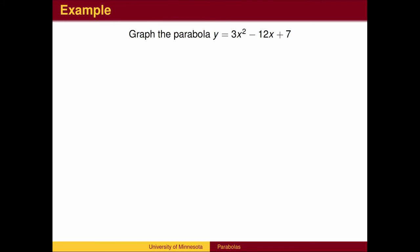We can now use this procedure to graph a parabola from its equation. First, we find the axis of symmetry, which is at x equals negative b over 2a. This also gives us the x-coordinate of the vertex.